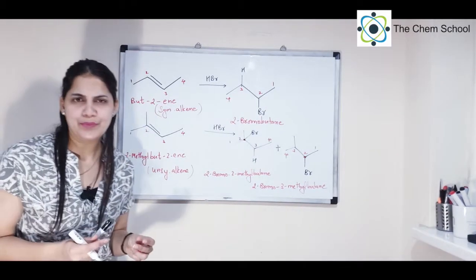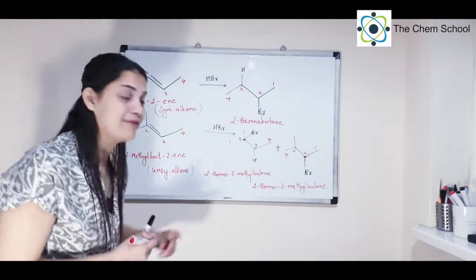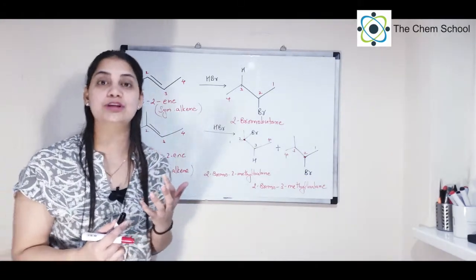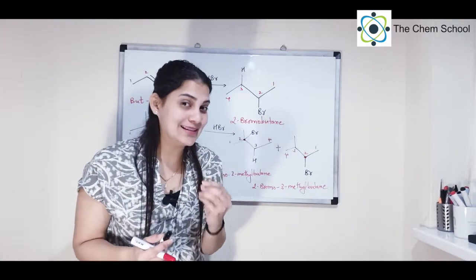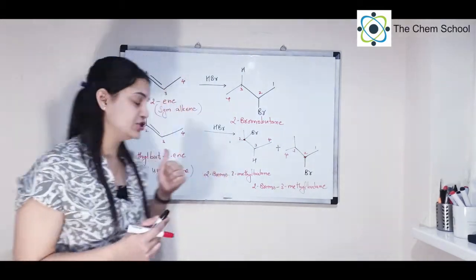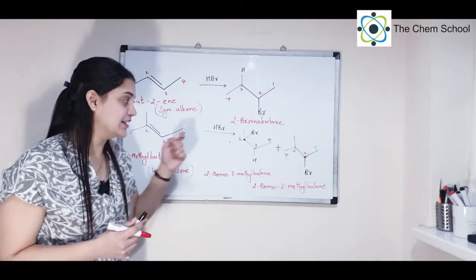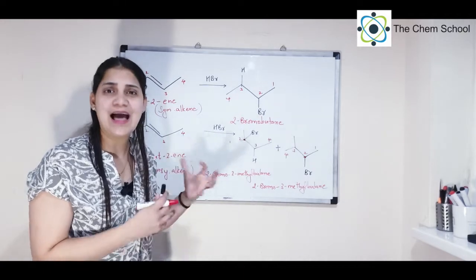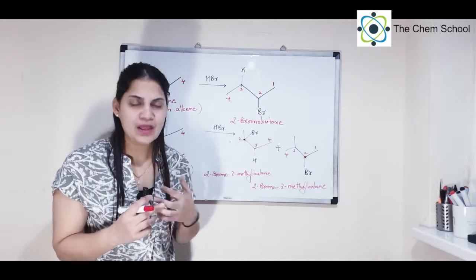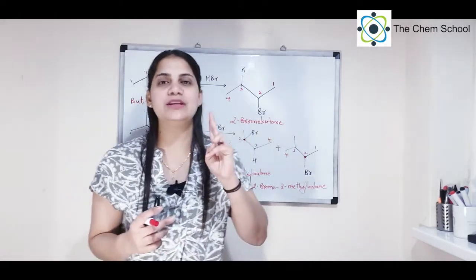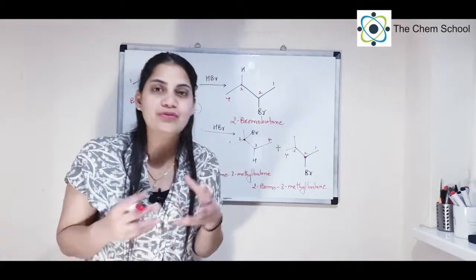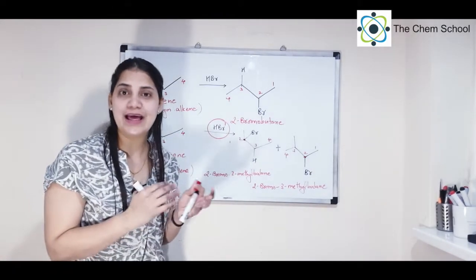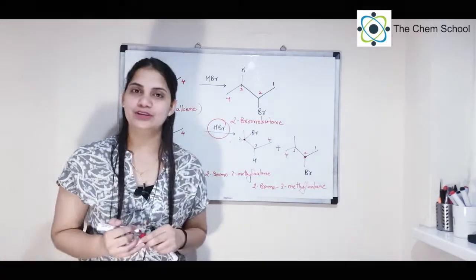In the first case we got only one product, so no rule was needed. But in the second case, because you have two products, you have to decide which is the major product or which is formed in larger quantity — and for that, Markovnikov's rule comes into picture. The conditions needed for Markovnikov's rule: first, you should have an unsymmetrical alkene; second, you should have an unsymmetrical reagent, usually halogen acids — HI, HBr, or HCl. We do not use HF because its bond dissociation energy is very high.